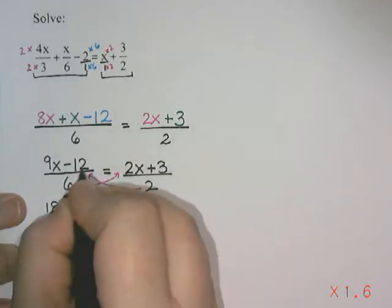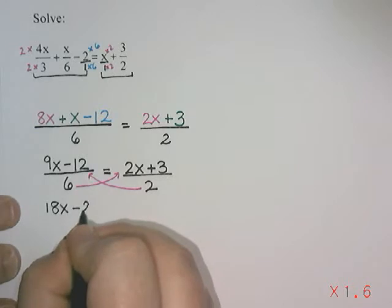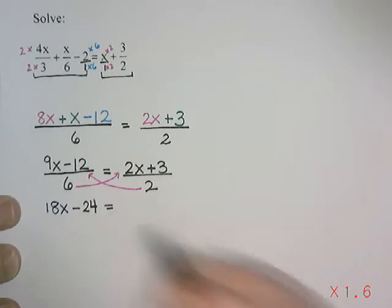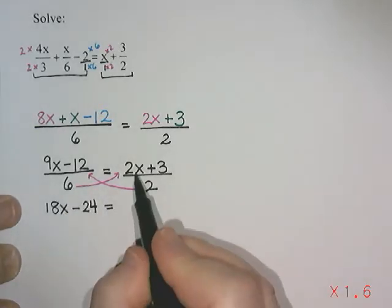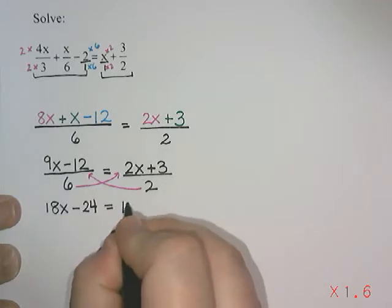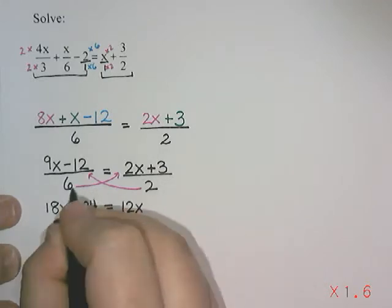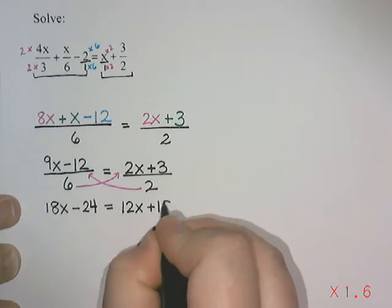And then we do 6 times 2x is 12x, and 6 times 3 is 18.